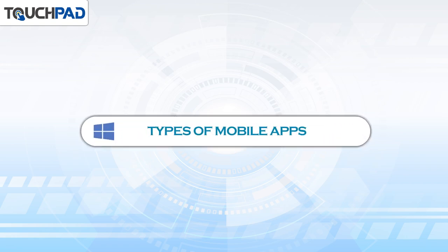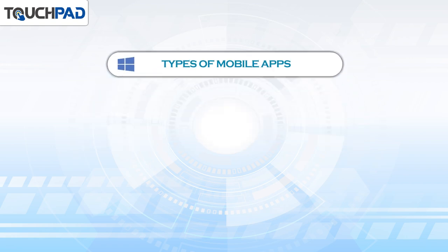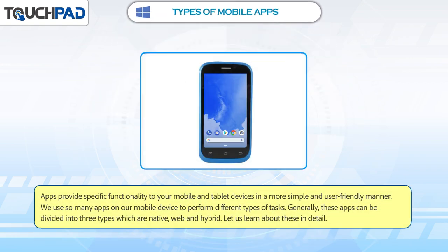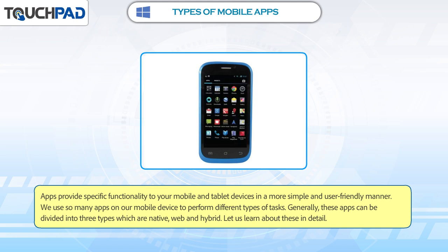Types of Mobile Apps. Apps provide specific functionality to your mobile and tablet devices in a more simple and user-friendly manner. We use so many applications on our mobile device to perform different types of tasks. Generally, these apps can be divided into three types which are Native, Web and Hybrid. Let us learn about these in detail.